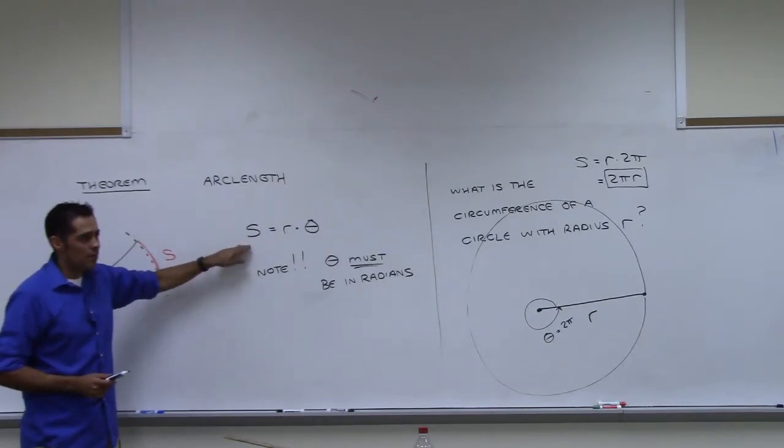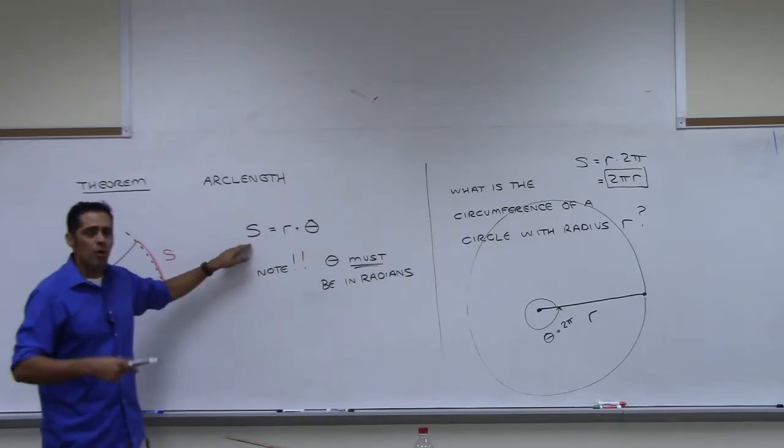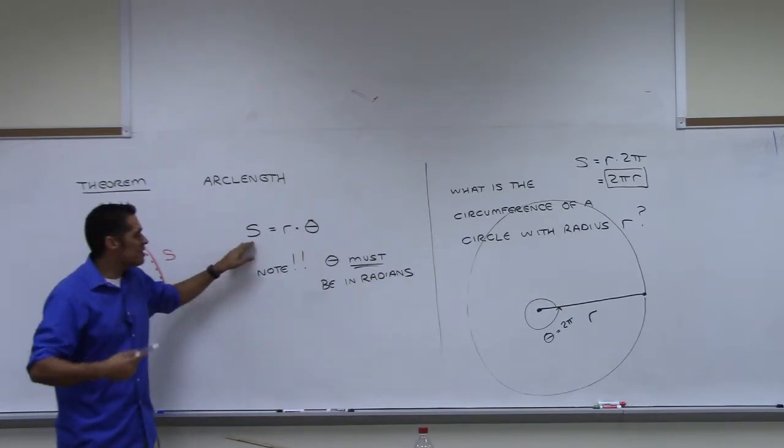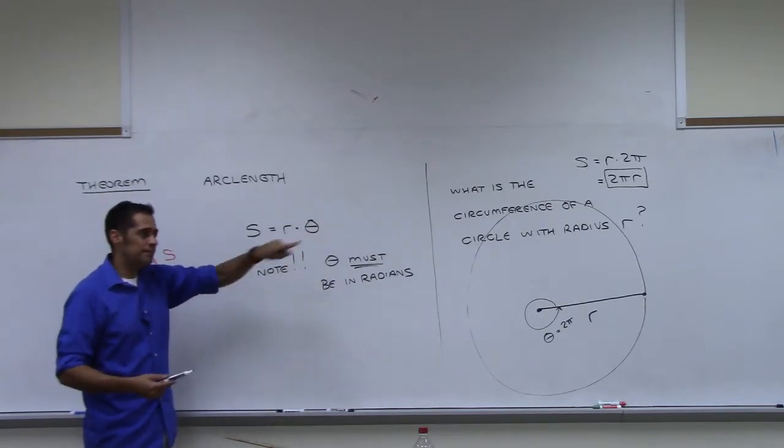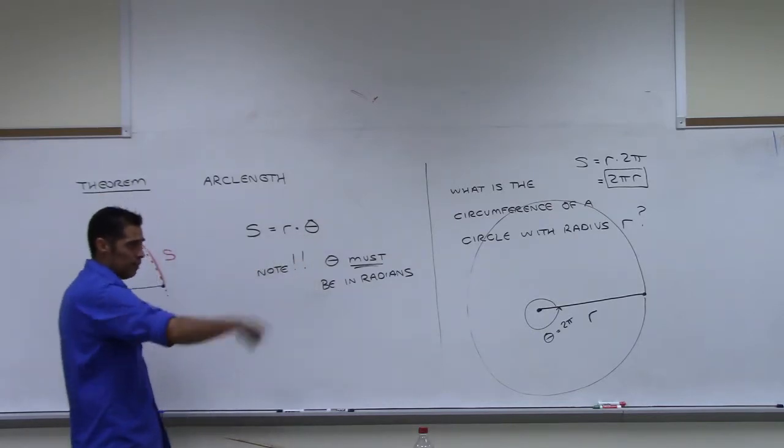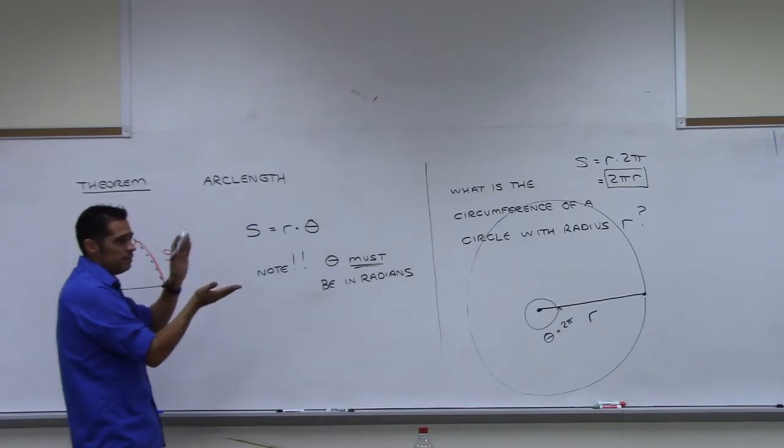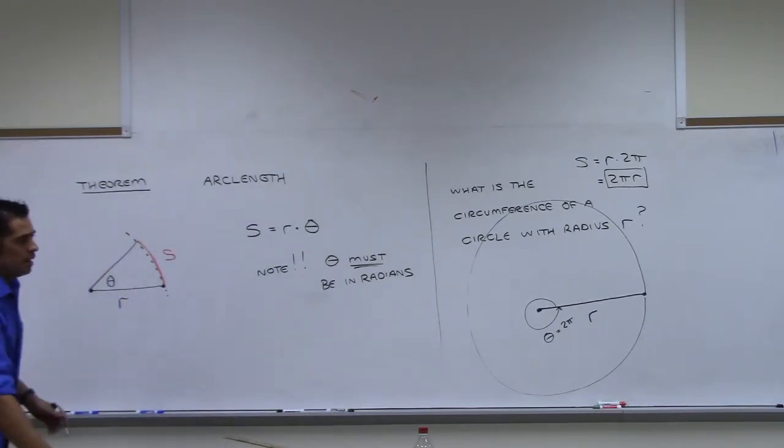This formula is more powerful because it doesn't force you to go all the way around. You can stop anywhere and still get the length. You can go the complete way or you can just take part of it.